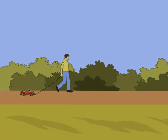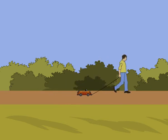Work done by a kid in pulling the toy car is w equals f into s cos theta. Here theta is the angle between f and s.